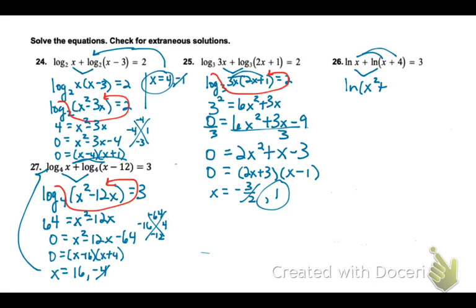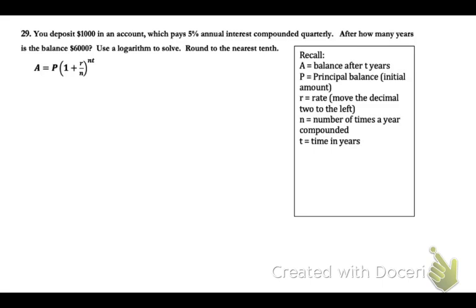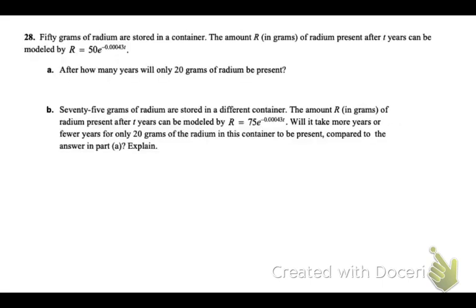Now let's do some real life problems. 50 grams of radium are stored in a container. The amount R in grams of radium present after t number years is R equals 50 times base e raised to the negative 0.00043t. After how many years will only 20 grams of radium be present? So we're going to plug in 20 for R. And this is radioactive material, so it takes a while for it to decay, go away. So the first thing we can do is divide both sides by 50.